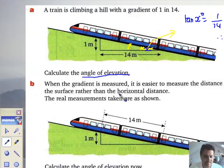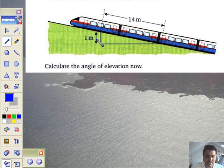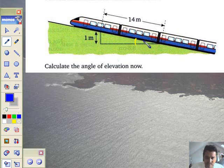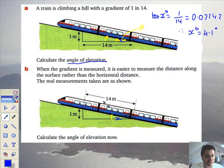Now, when the gradient is measured, it's a lot easier to measure the distance along the surface rather than trying to go horizontal like that. The real measurements taken are shown. In other words, the height is now 14 and the op is now 1. So calculate the new angle of elevation. So what's the angle of elevation? It's that angle right there. We can call that x as well or something similar. Work over in blue. So opposite and hypotenuse, op and hype. Let's just label it for you in case you've forgotten. That's op, that's hype.